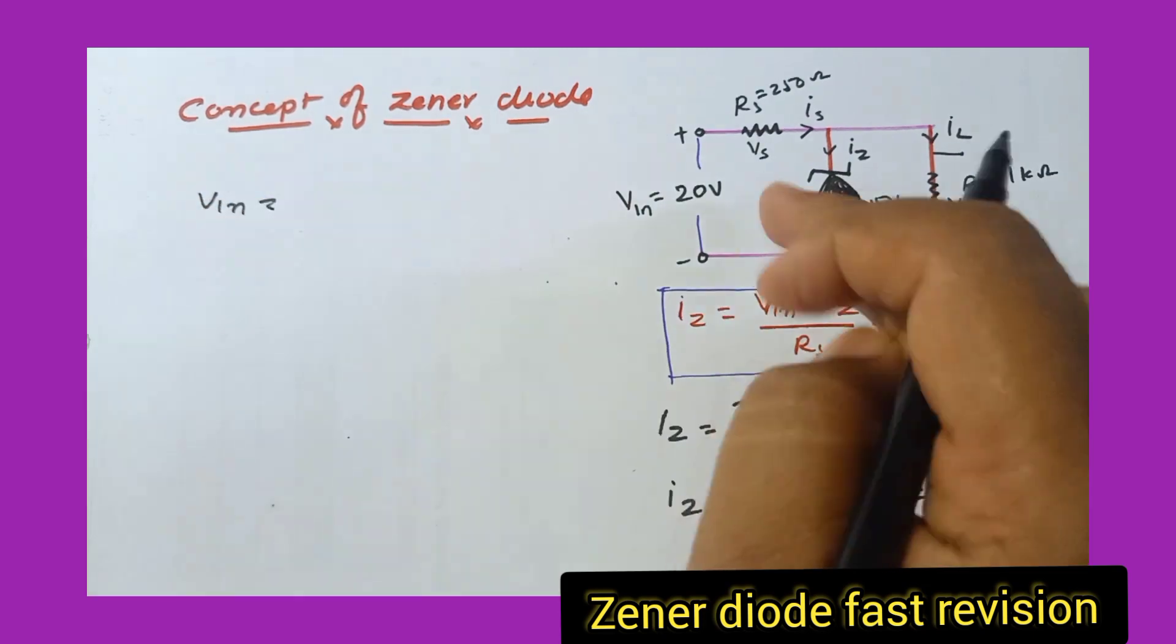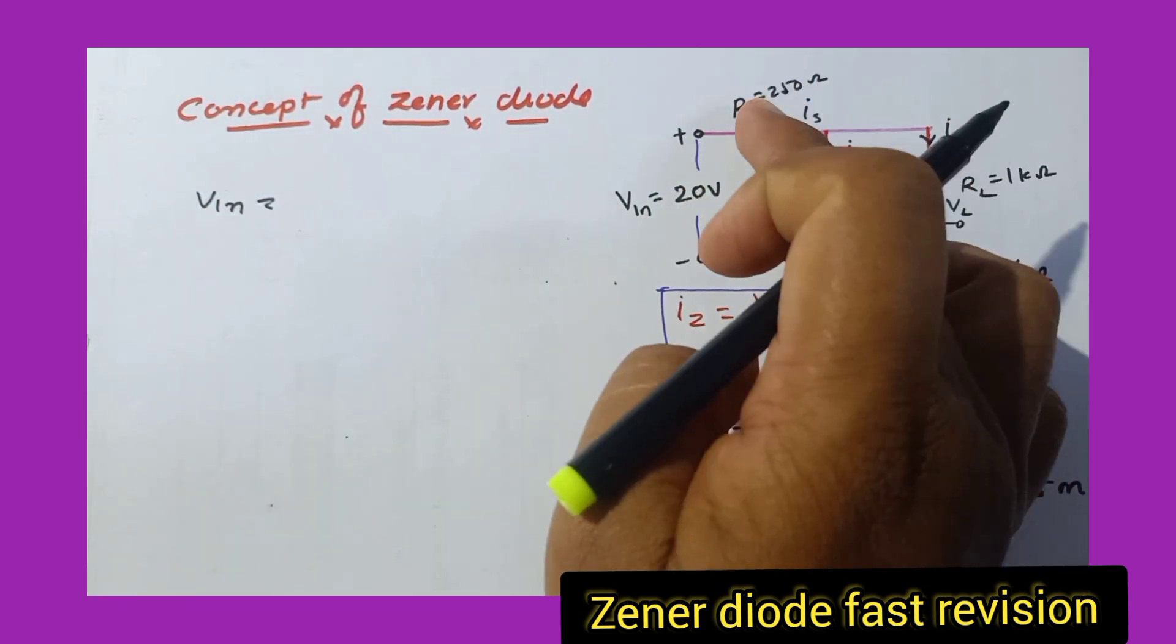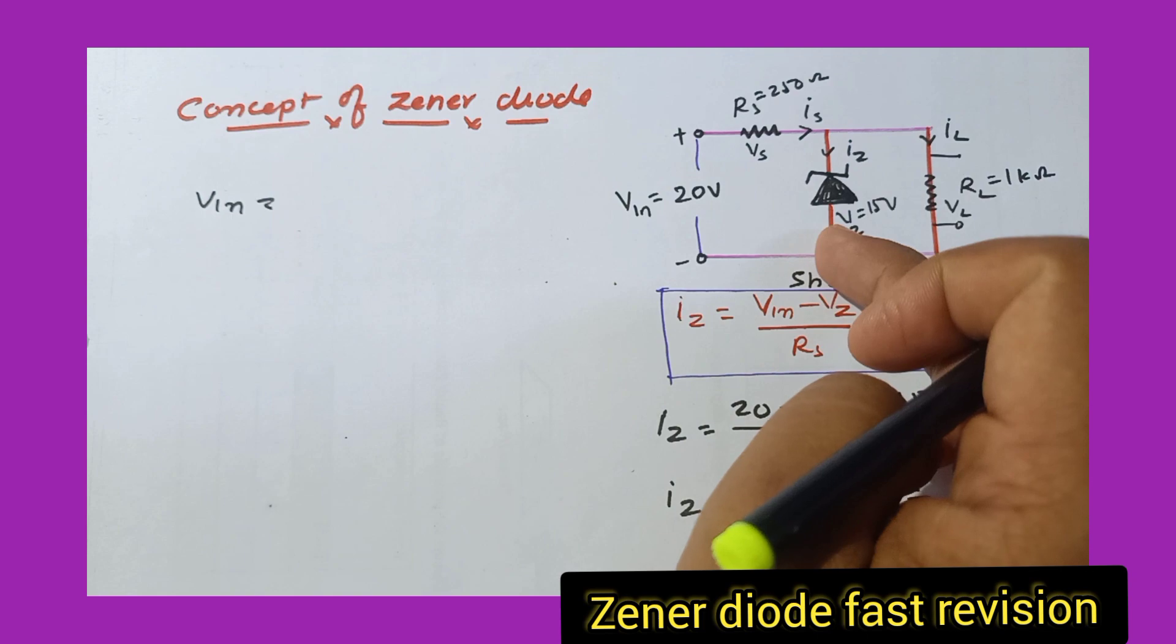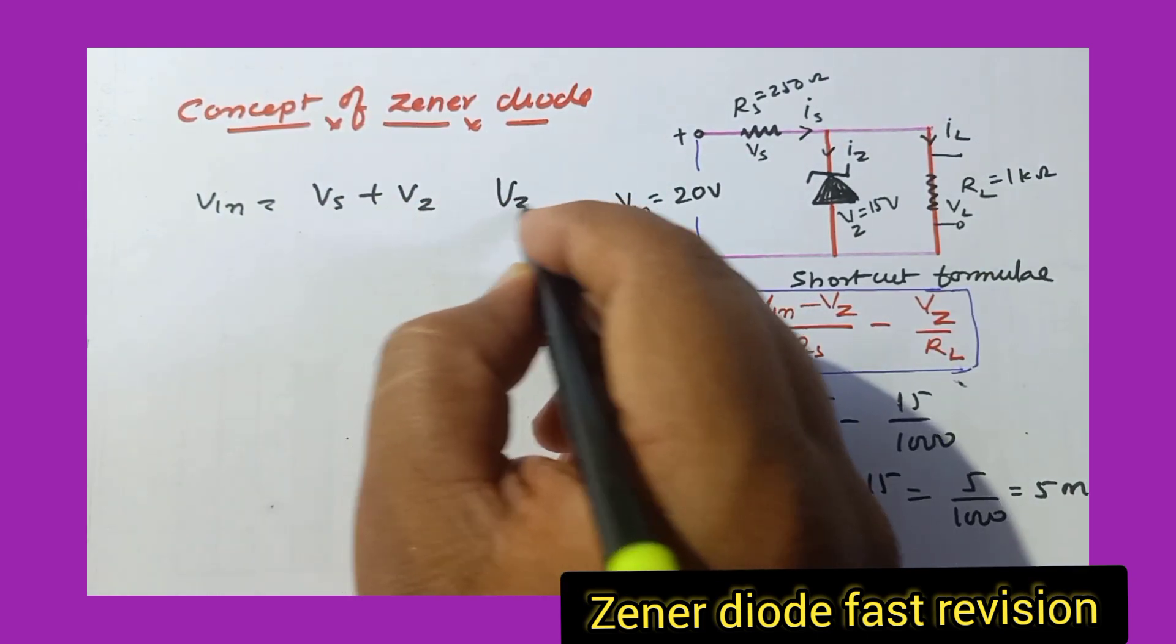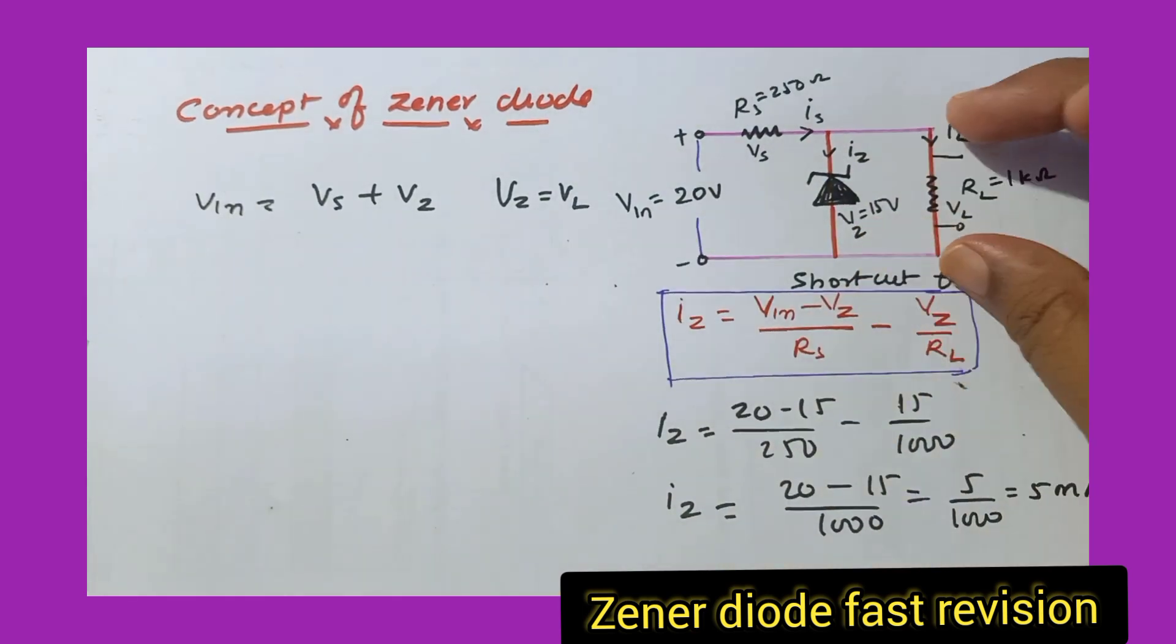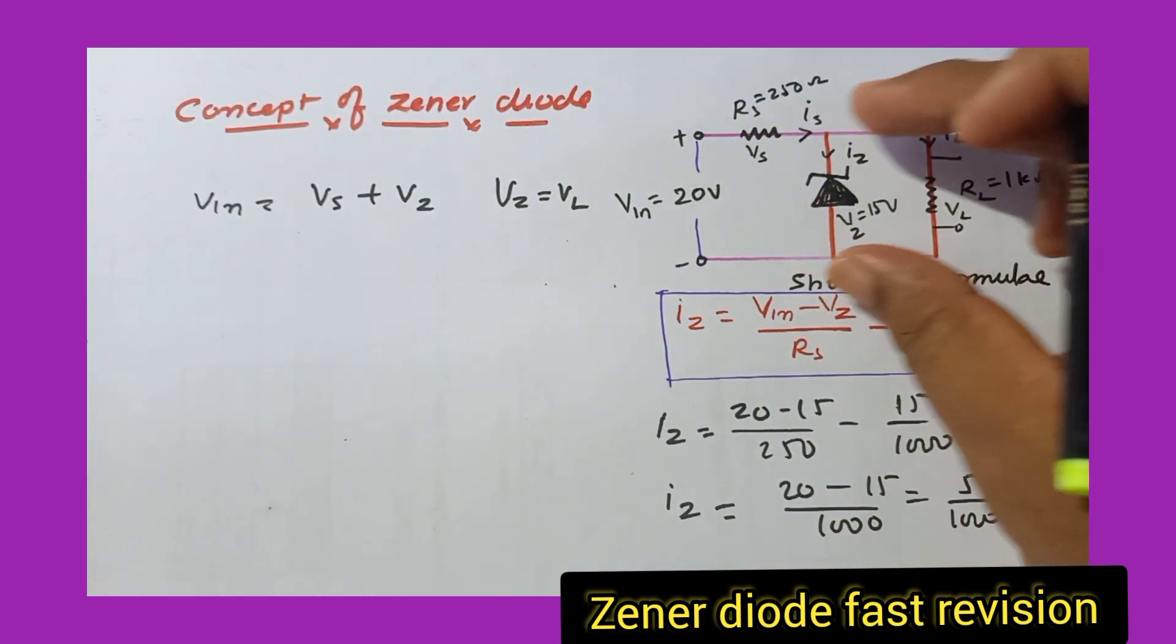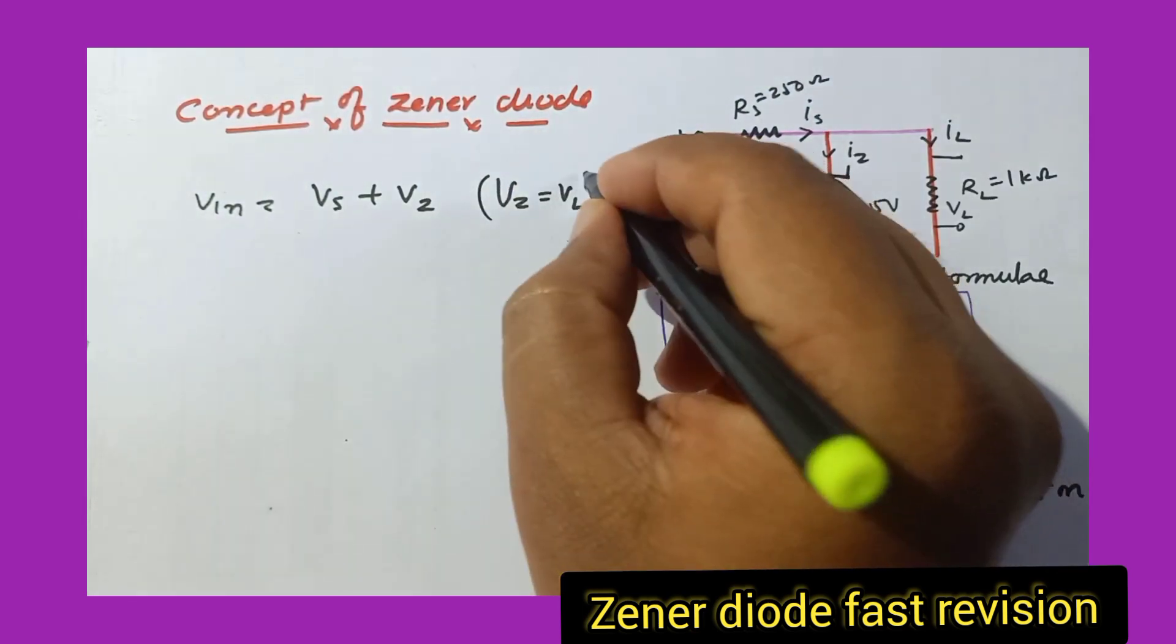You all know that whatever input voltage you are supplying here, that input voltage gets divided along the series resistance as well as Zener diode. So you can write this as Vin = Vs plus Vz. And you also know that Vz is equal to Vl. Load resistance voltage as well as Zener voltage both will be same because they are parallel connected. So this point you have to remember.